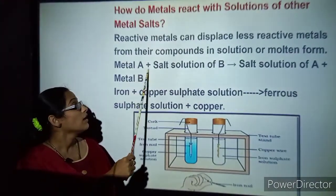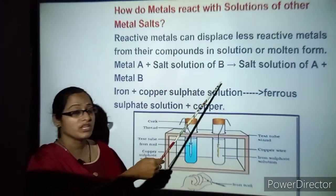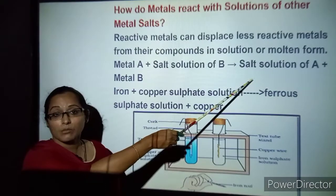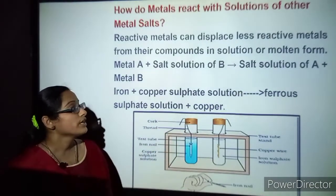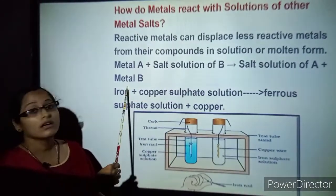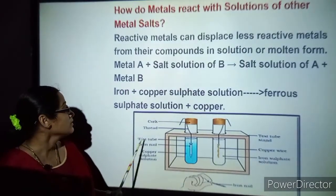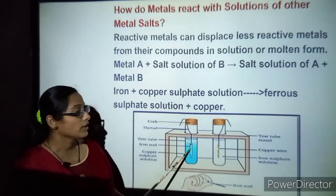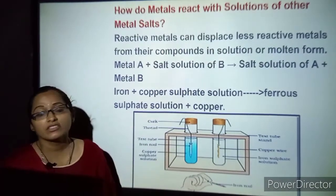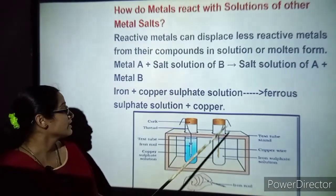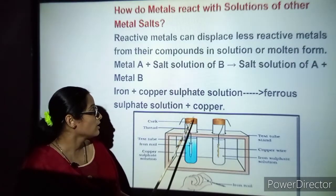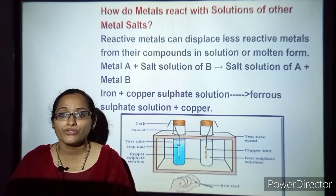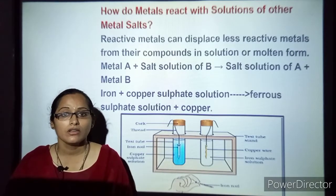When metal A is added to a salt solution of metal B, a displacement reaction occurs: it forms salt solution A and releases metal B. For example, when copper sulphate solution has an iron rod or iron nails dipped into it, ferrous sulphate solution (green in colour) is formed and copper gets deposited. In the next video we will know more about the reactivity series. Thank you all for watching.